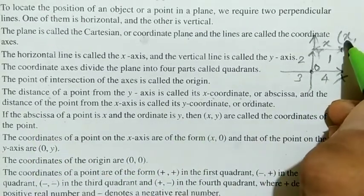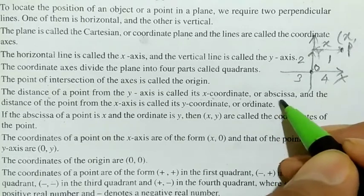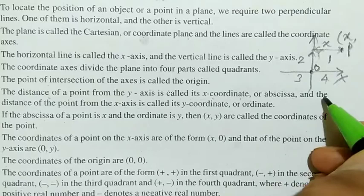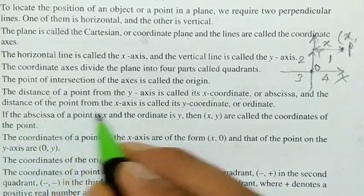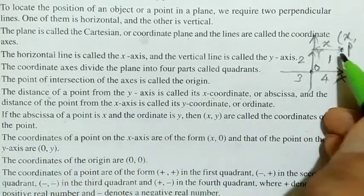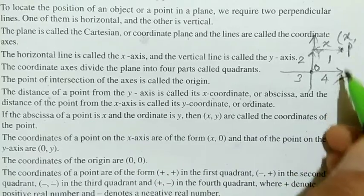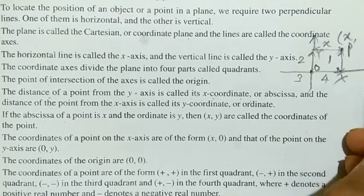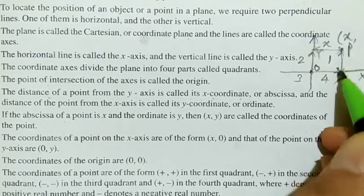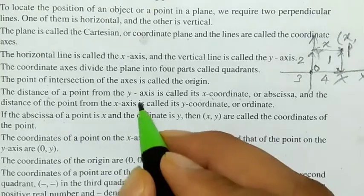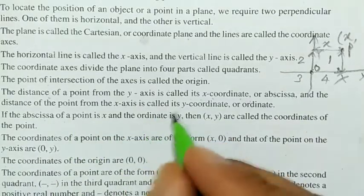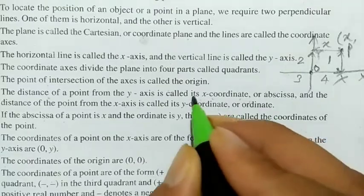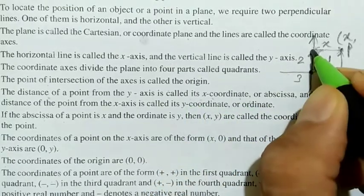We also call the x-coordinate the abscissa — spelled A-B-S-C-I-S-S-A. So x-coordinate and abscissa are the same thing. The distance of the point from the x-axis is called the y-coordinate. So the distance from the y-axis gives the x-coordinate, and the distance from the x-axis gives the y-coordinate.